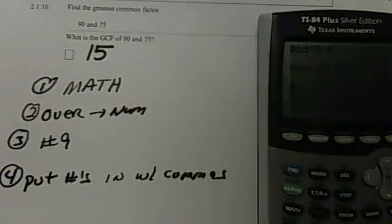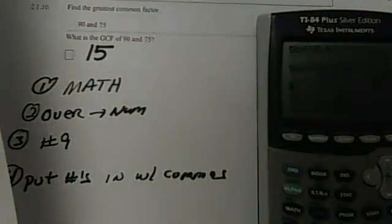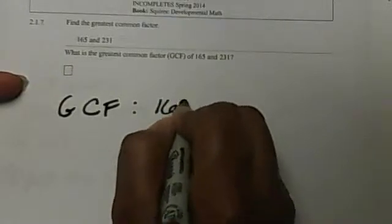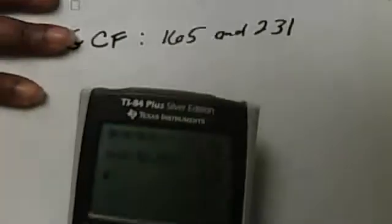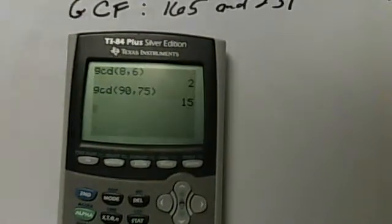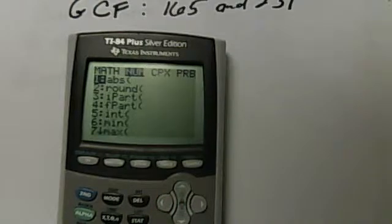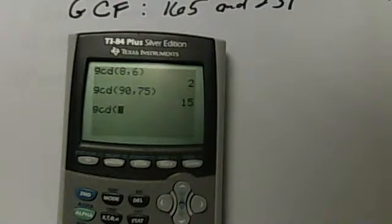Let's try another one. Here we want the GCF of 165 and 231. Again, math, go over to NUM, hit the number 9, and put in your two numbers separated by a comma. 165 comma, on top of the 7, 231. Close your parenthesis, and we have our answer is 33.